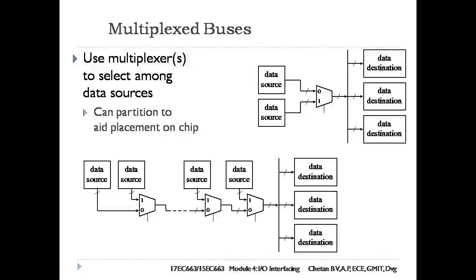Multiplexed Buses: A multiplexer selects among the data sources. The multiplexer selects the value to drive the bus signals based on a control signal generated by a control section. If the bus has a small n number of data sources, an n-input multiplexer is required for each bit of the encoded data transmitted over the bus.